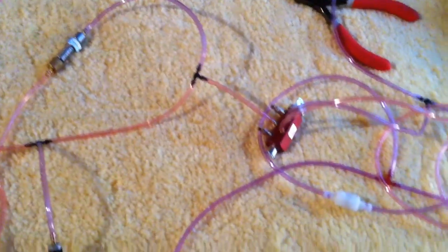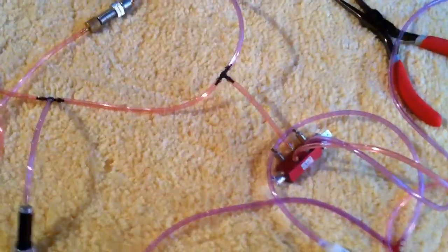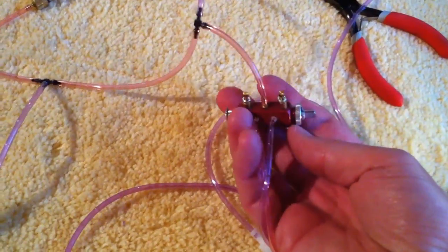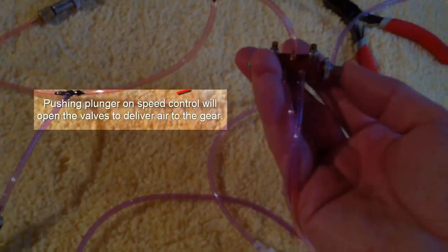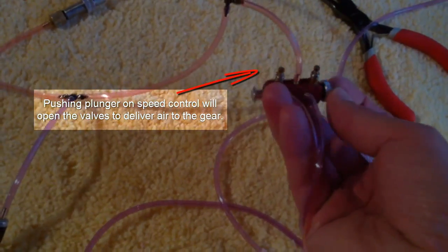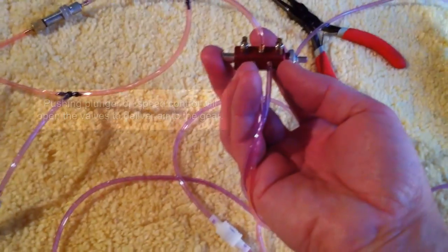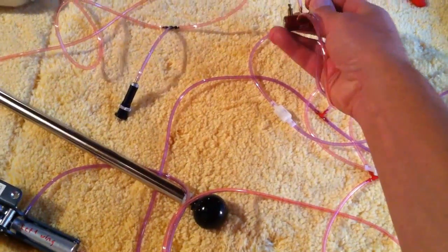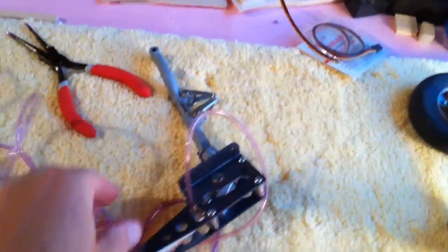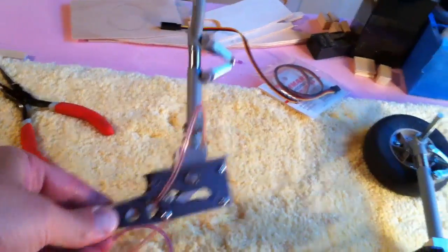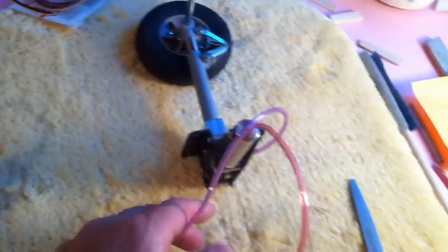So I'm going to go ahead and actuate the retracts, and to do that I'm going to use the speed control valve. That has a plunger and what you do is just slide that back and forth. In this case I'm going to push it this way. Okay, and as you can see it extended the retracts - nose gear, wing, and wing.